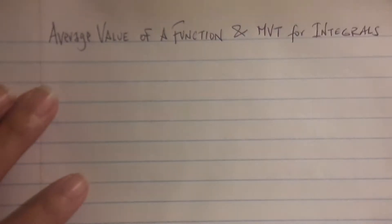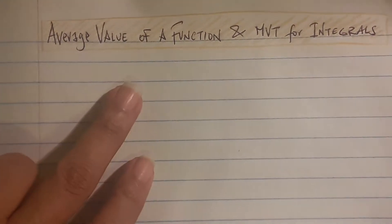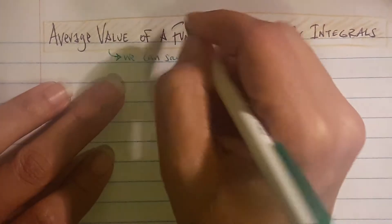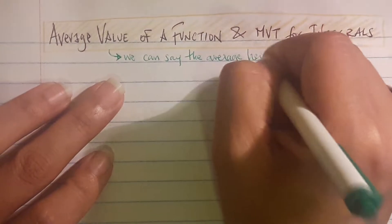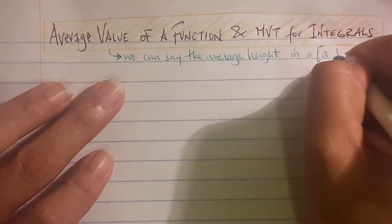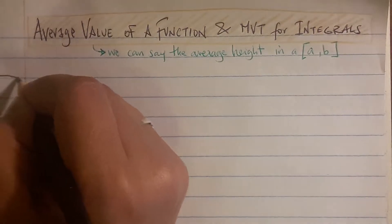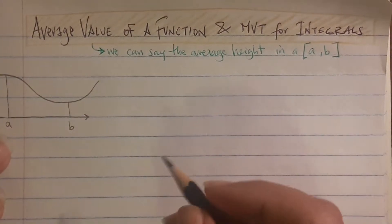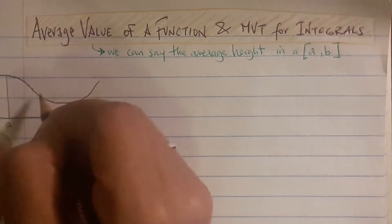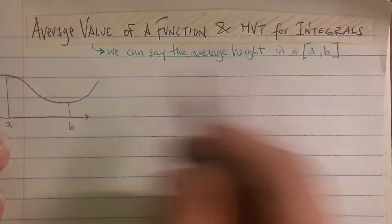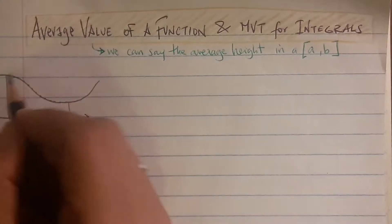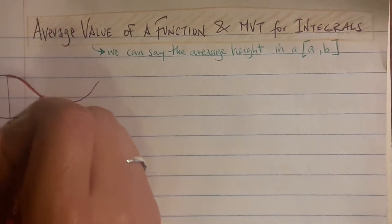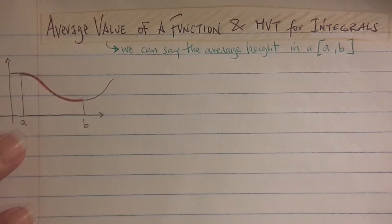When it comes to average value of a function, that's also known as the average height in the closed interval [a, b]. So if you draw a curve with a closed interval a and b, the average value of the function is all those points on the y-axis — taking the average of those. That's also known as the average height.